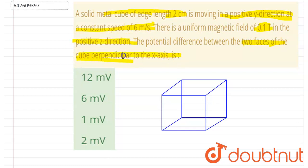Now let's suppose this is the x-axis, and this is the y-axis. It is given that the cube has a constant velocity of 6 meters per second in y direction.